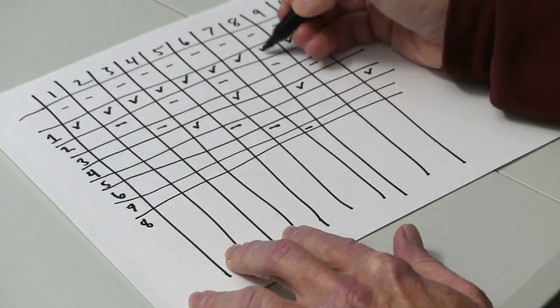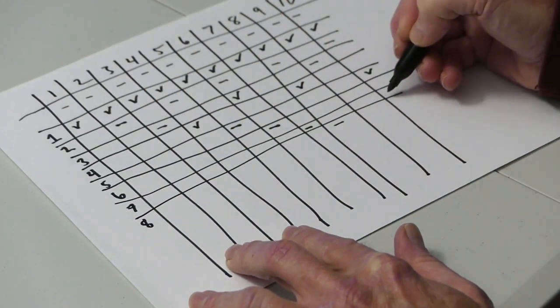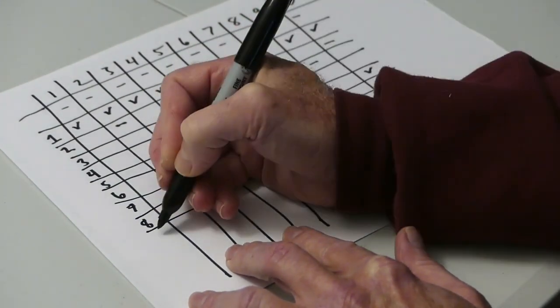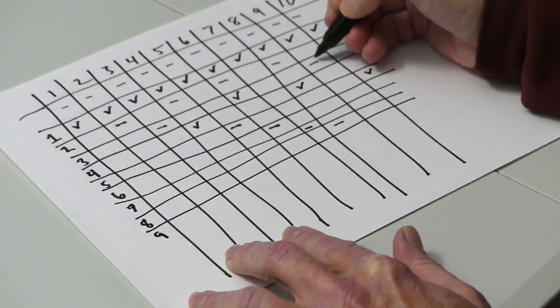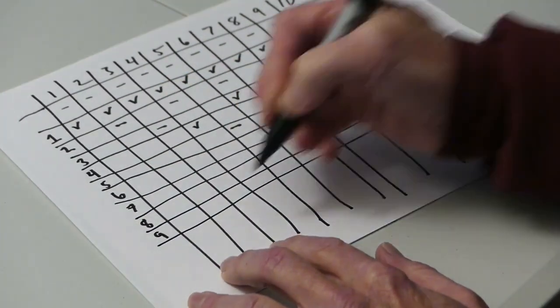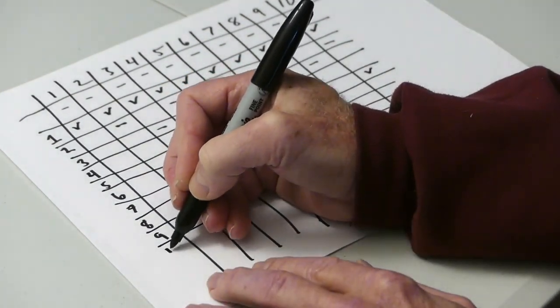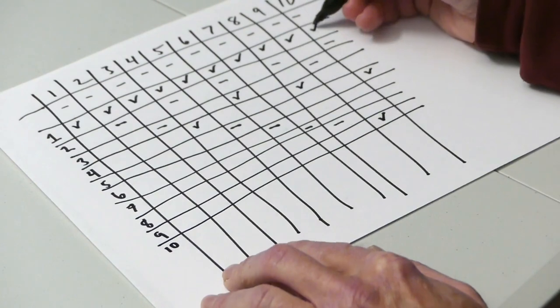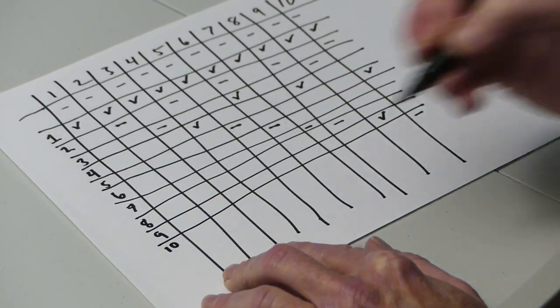Student number 8 starts at locker number 8 and closes it. Student 9 starts at locker number 9 and opens it. Finally, student number 10 starts at locker 10 and closes it.